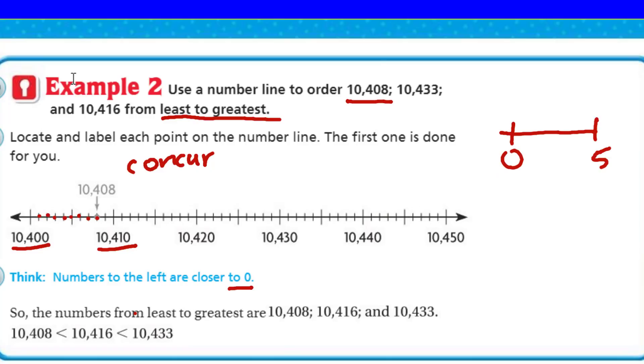I concur. Which is just a fancy word to mean I agree. Numbers to the left are closer to zero. Yeah. Zero is way over here and who knows? Infinity and beyond. Never mind. So, the numbers from least to greatest are. They're giving us the answer, but we didn't plot them yet. We were supposed to do that. Label it. Ten thousand four hundred thirty-three.